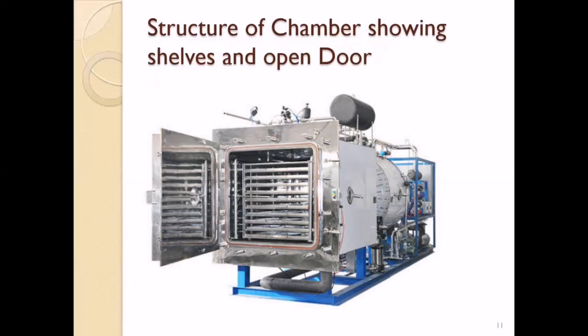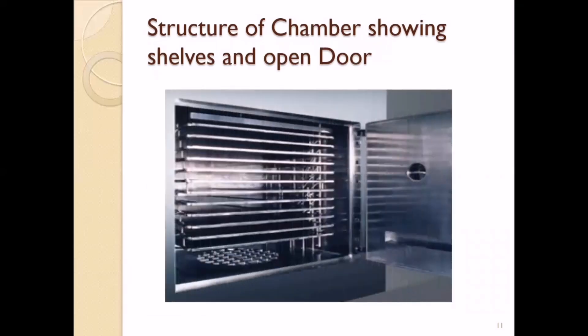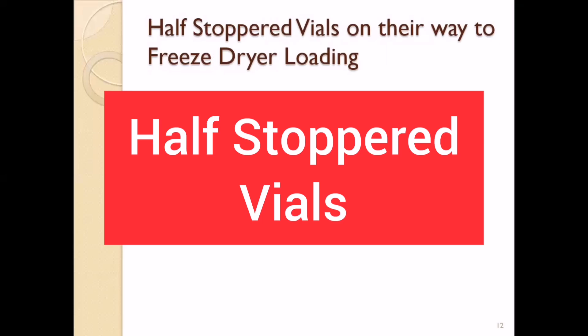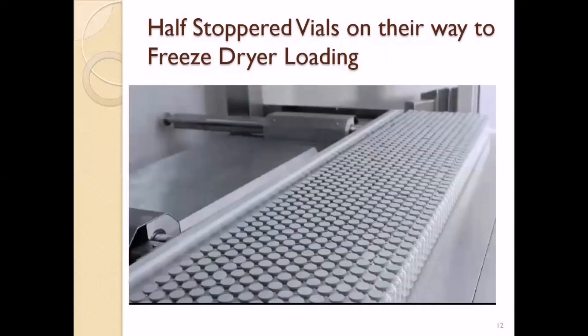Now let's understand the structure of the chamber. This is a basic rectangle chamber structure with shelves inside — this is how the freeze-dryer chamber looks from inside when the door is open. The half-stoppered vials are filled and arranged onto the shelf, and then with one push they go into the chamber area onto the shelf.